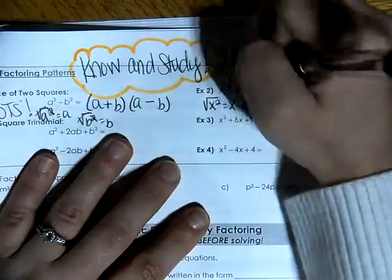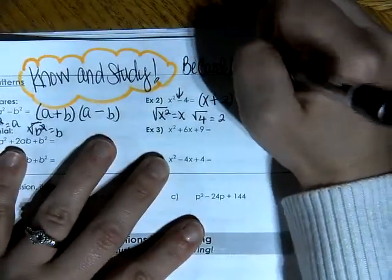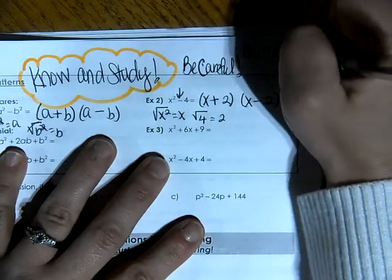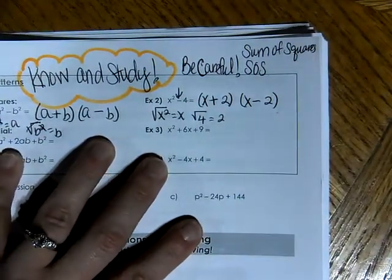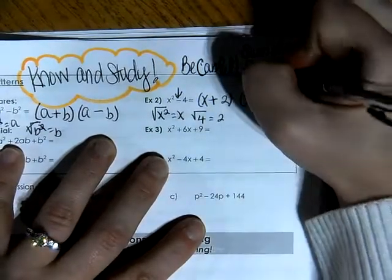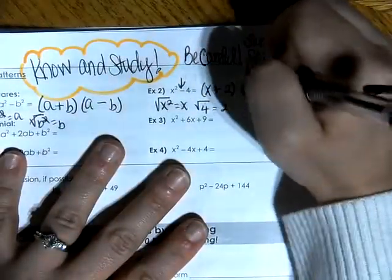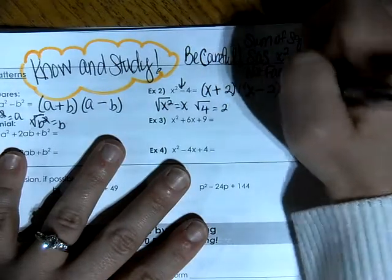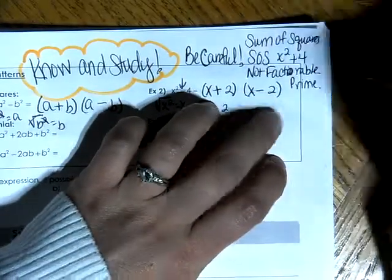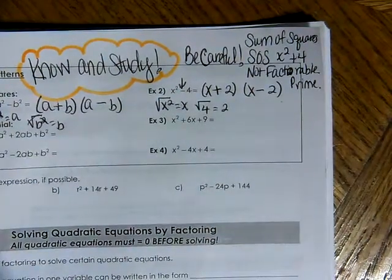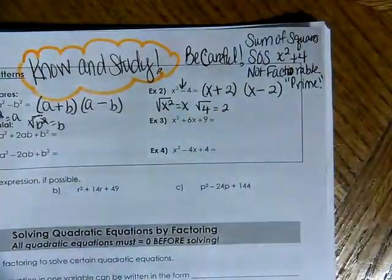Please be careful — there exists something called a sum of squares, which I call an SOS. An SOS means save our ship, and if you're putting out an SOS, that's not a good thing. A sum of squares looks like x squared plus 4, and x squared plus 4 is not factorable. We also call it prime. There's nothing you can do with those problems — you cannot factor them at all.